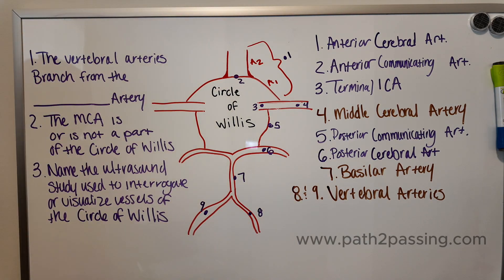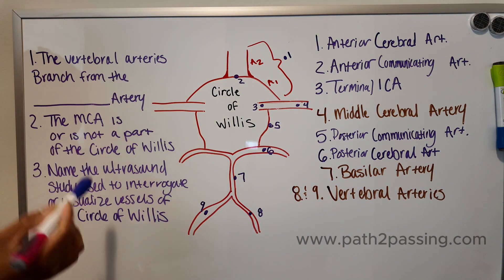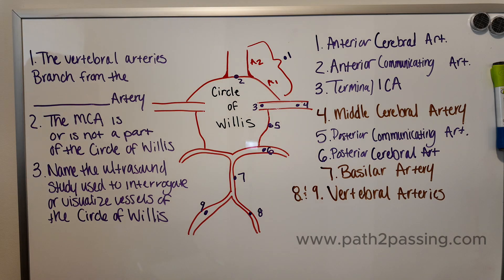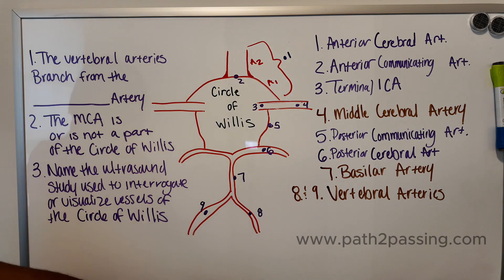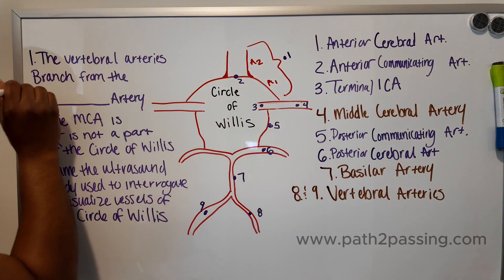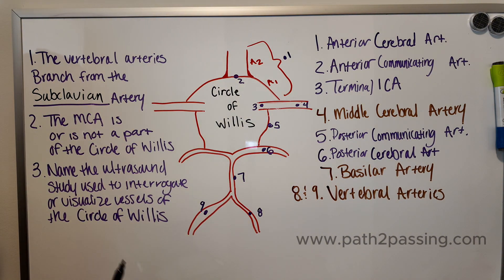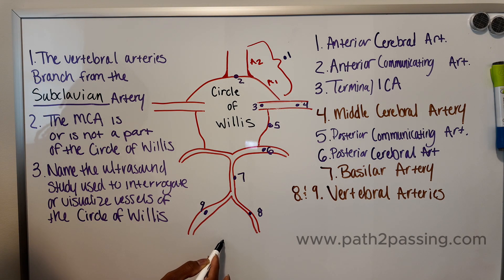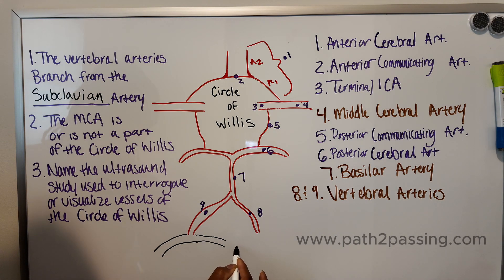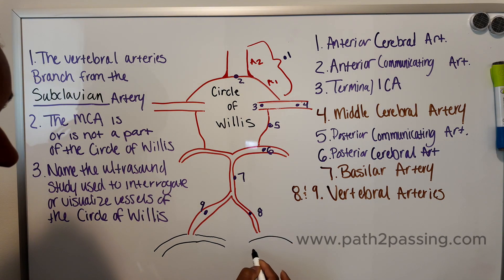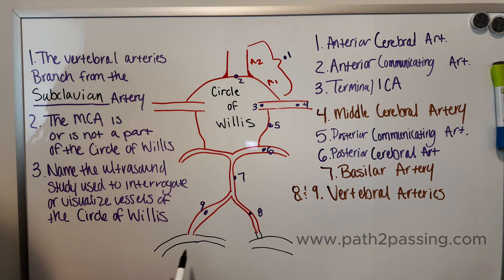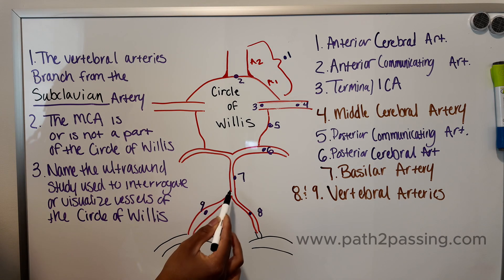Question one: the vertebral arteries branch from the blank artery. The answer is the subclavian artery. You have a right and left subclavian artery, and each gives rise to a vertebral artery. Those right and left vertebral arteries then come together to form your basilar artery.